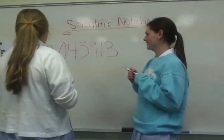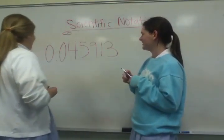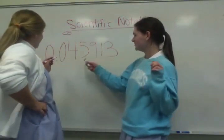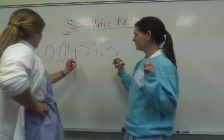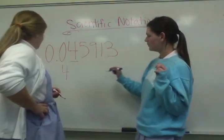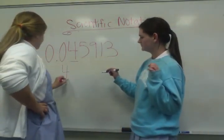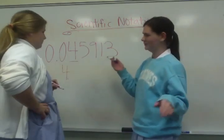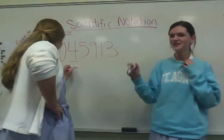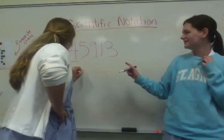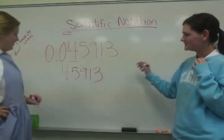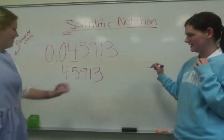This is how you rewrite a number in scientific notation. You figure out the first numeral, so you write four point, and then you write the rest of the numbers, which would be five, nine, one, three, times ten.